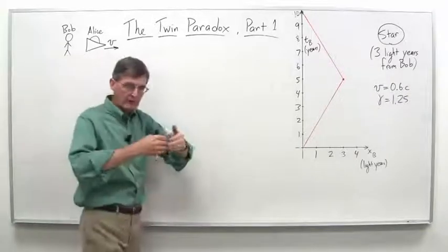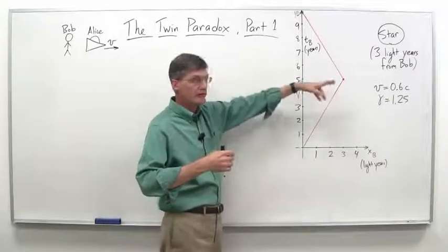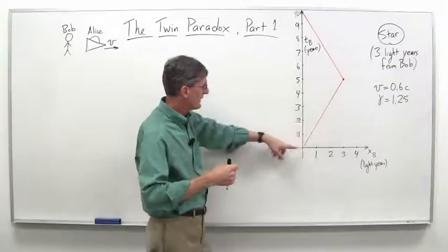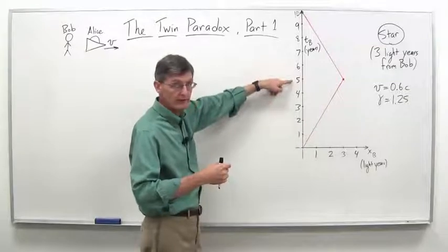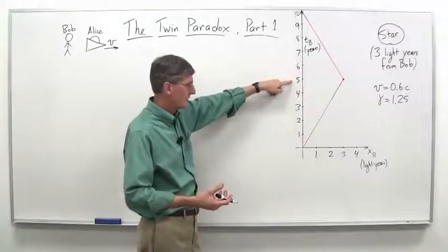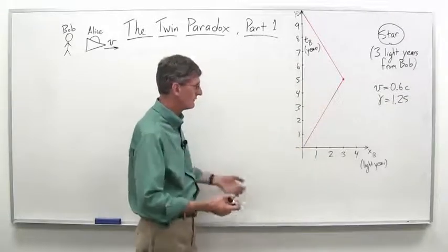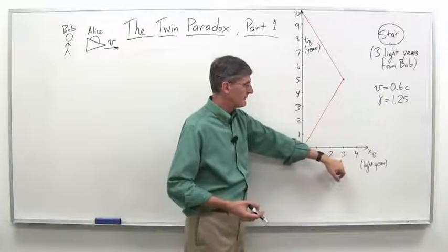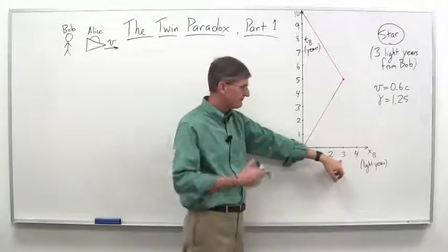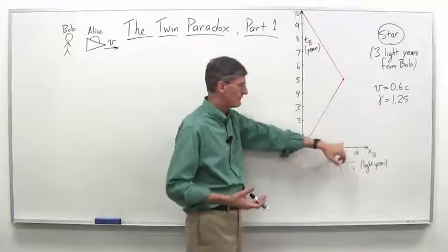Well, at a velocity of 0.6c, as she travels away from him, that means if the star is three light-years away, it will take her five years to get there. Five years times 0.6 times the speed of light gives us the three light-years. Five times 0.6 is three.